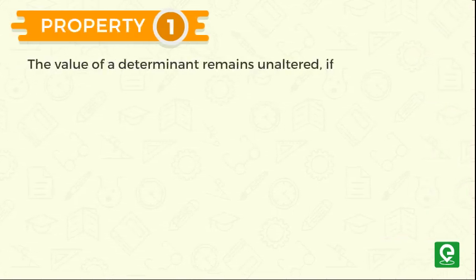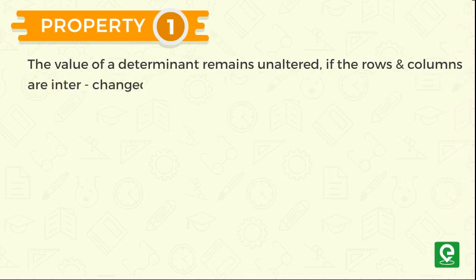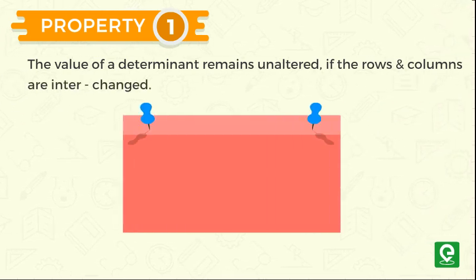Property 1: The value of a determinant remains unaltered if the rows and columns are interchanged. For example,